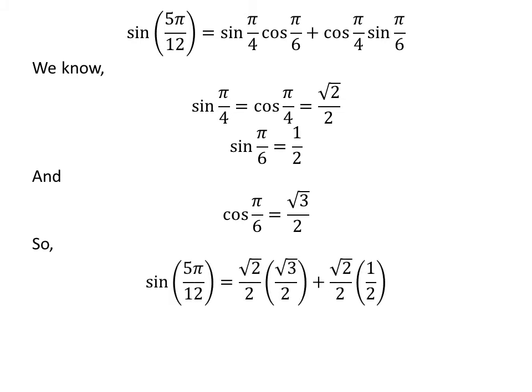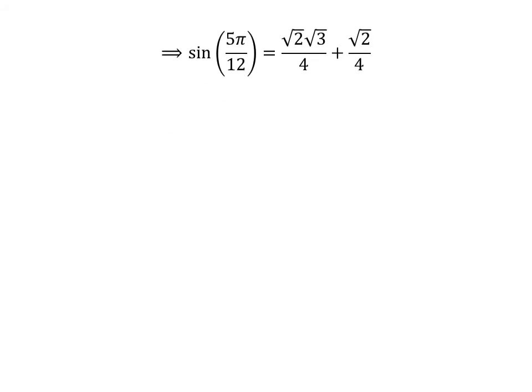Plugging these values into the equation gives us sine of 5 times pi upon 12 is equal to square root of 2 upon 2 times square root of 3 upon 2, plus square root of 2 upon 2 times one half. Further simplification gives us square root of 2 times square root of 3 upon 4, plus square root of 2 upon 4. Adding the fractions gives us square root of 2 times square root of 3 plus square root of 2, all upon 4.